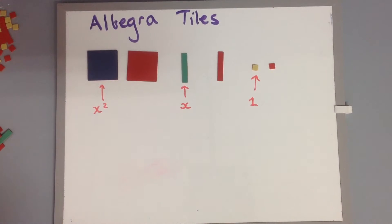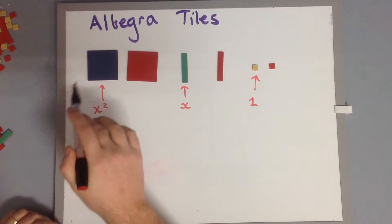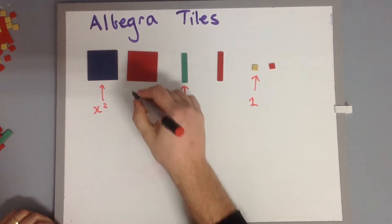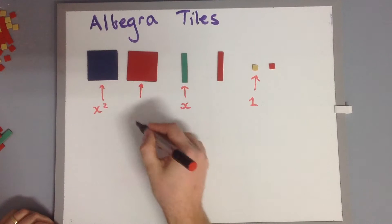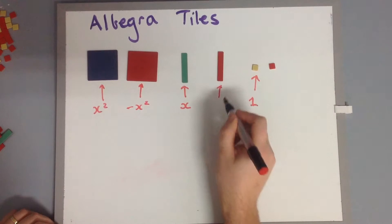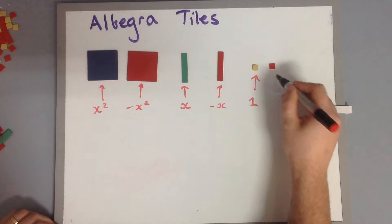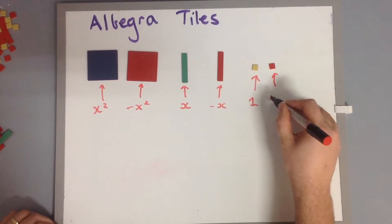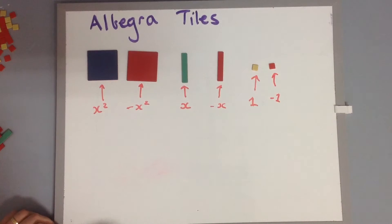But as you can see, we've got two colors. What makes our red side different from our blue side? We're going to say that our red side is negative x squared, our red side for this one is negative x, and our red side for this one is negative 1.